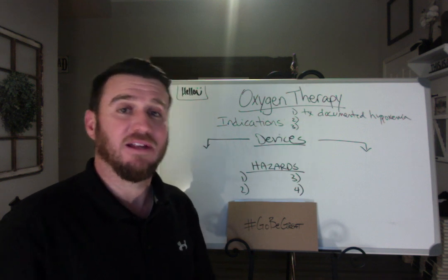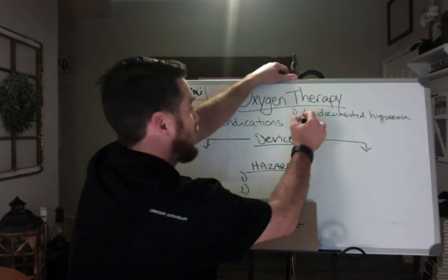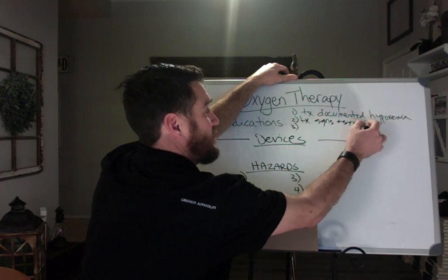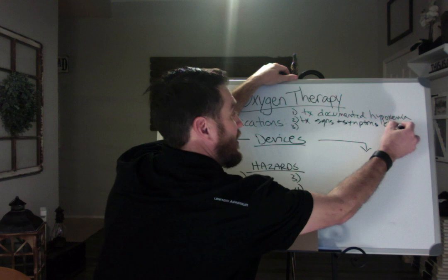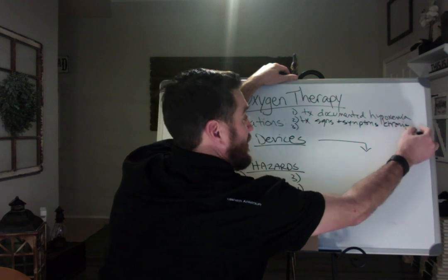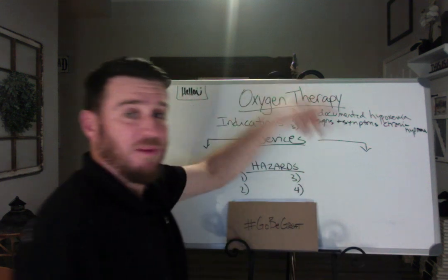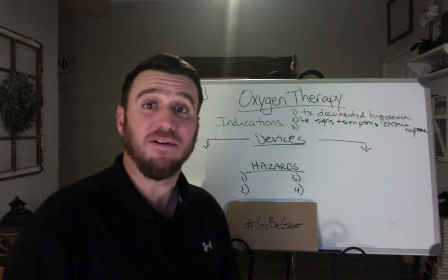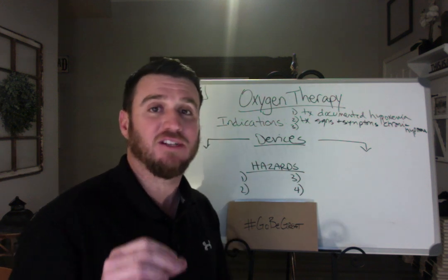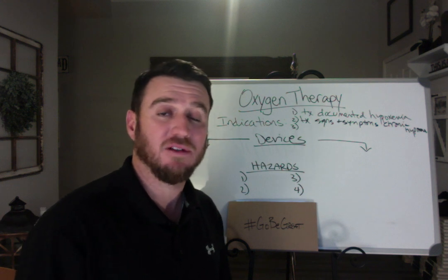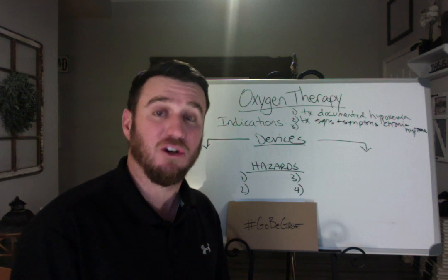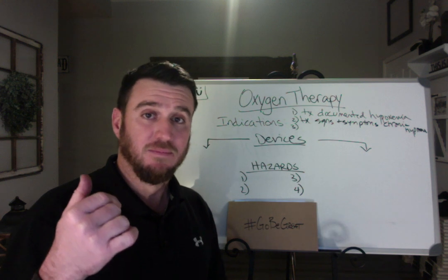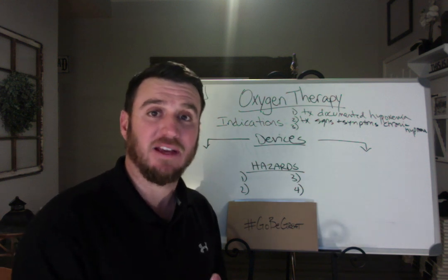The second indication is to treat the signs and symptoms of chronic hypoxemia. This is a COPD patient who lives at an oxygen saturation of 89%. When are you going to put them on oxygen? When they present with signs and symptoms associated with chronic hypoxemia — so shortness of breath, tachypnea, tachycardia, things like that.